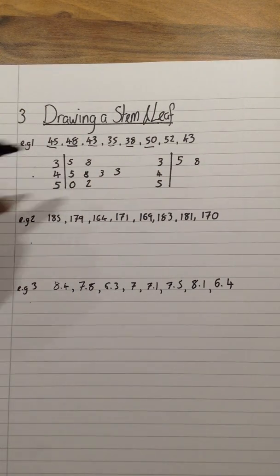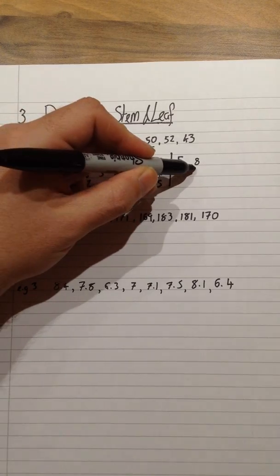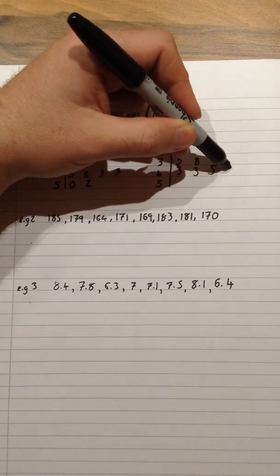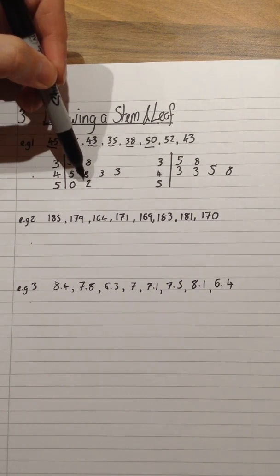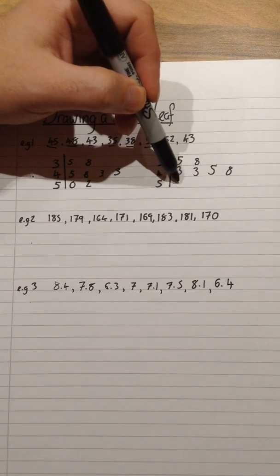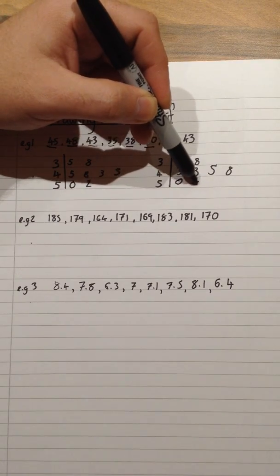And then we put all of the leaves in order in each row. The top row is actually already in order. So it's 5 and 8. This row, however, becomes 3, 3, 5, and 8. So putting these numbers into order. And actually the bottom row is already in order. So I can put 0 and 2.